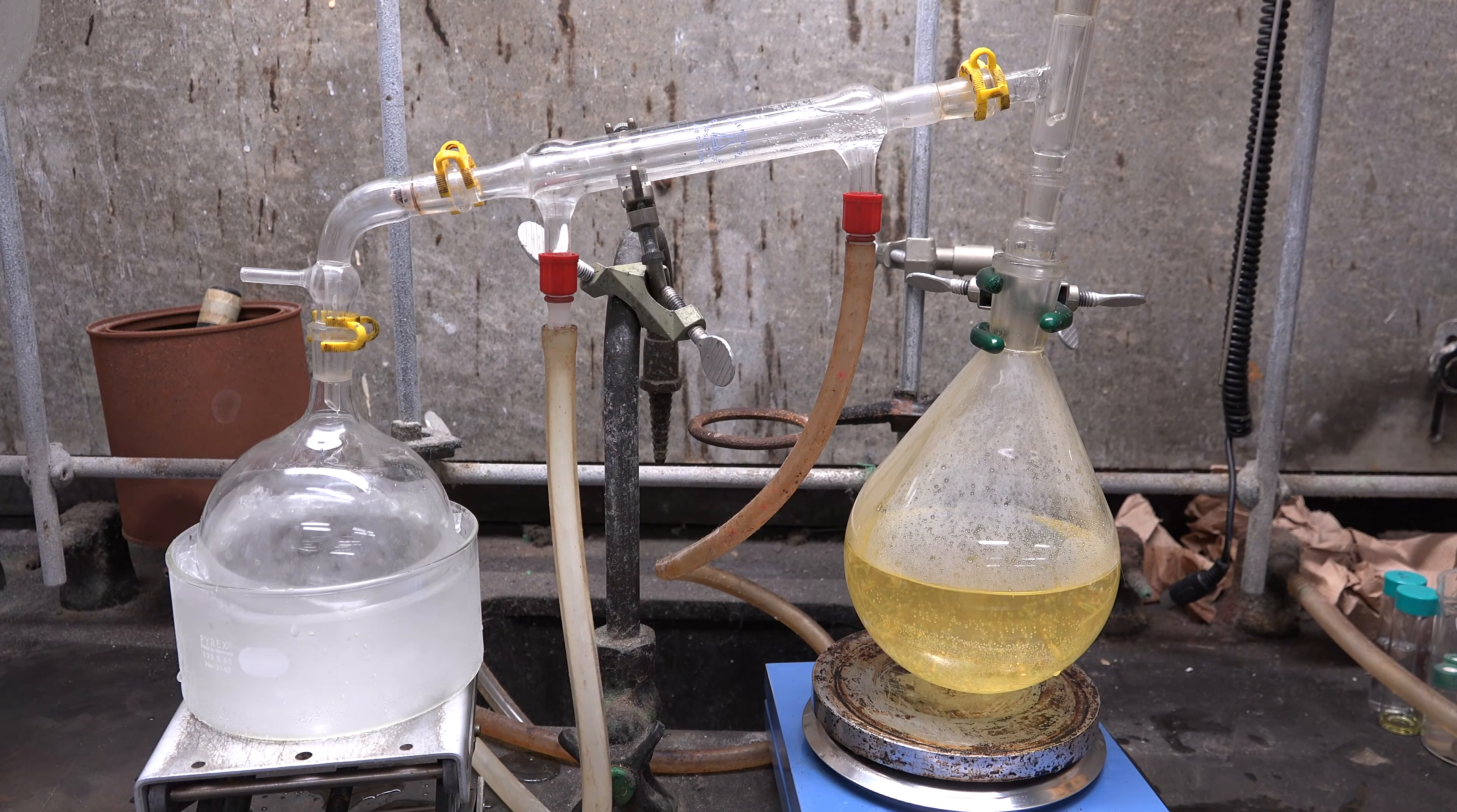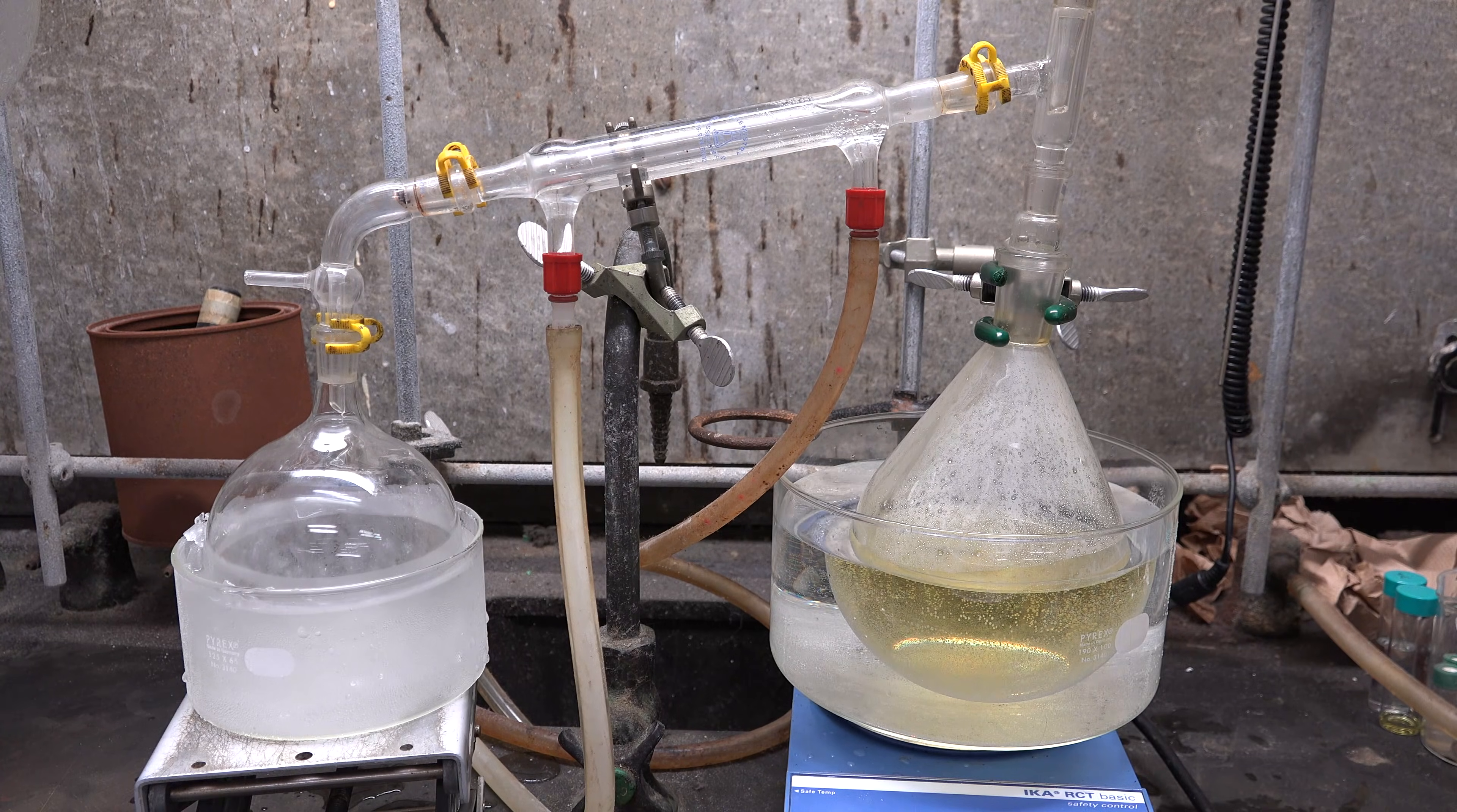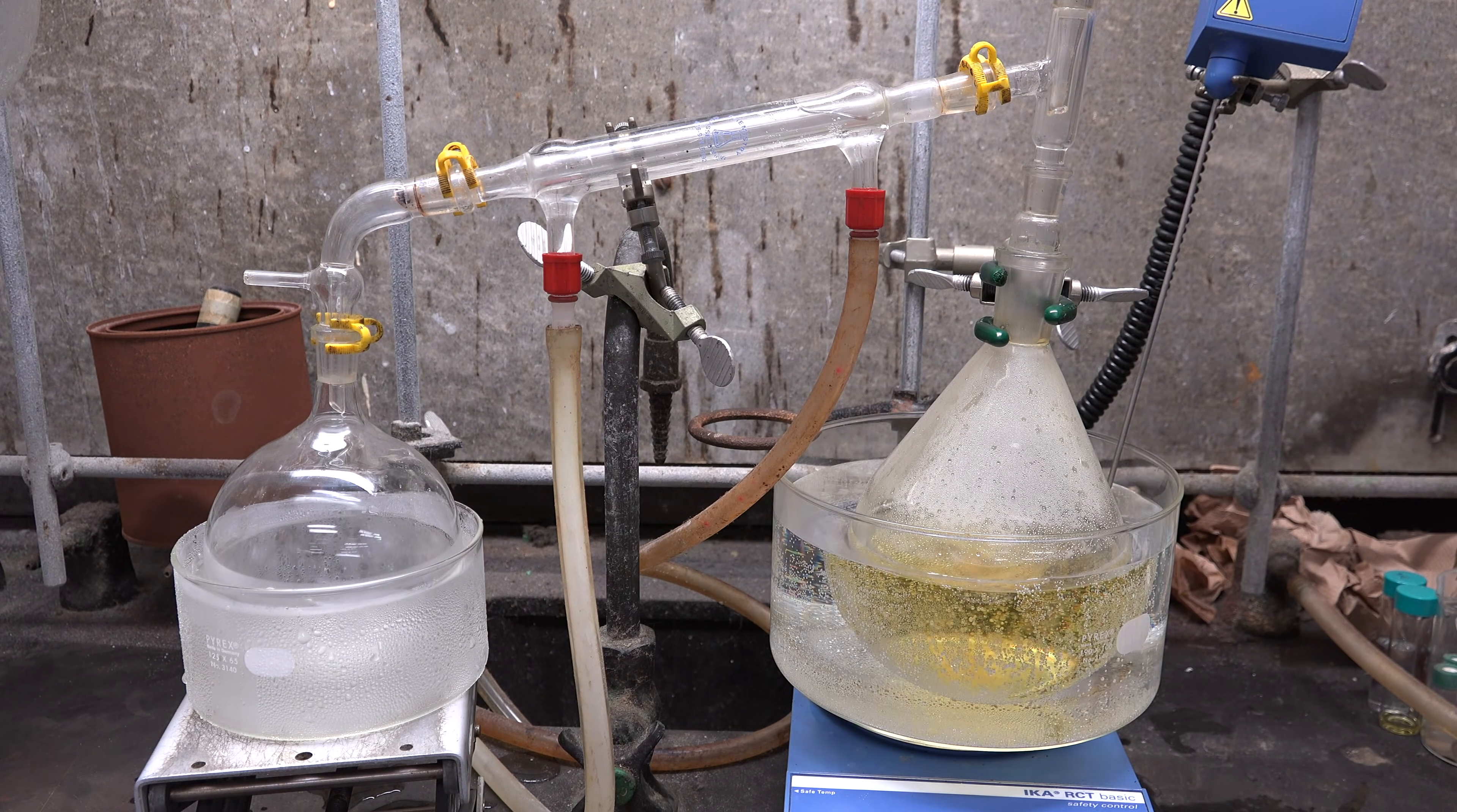As you can see we're already getting some condensation as the bromoethane vaporizes. Once all the sulfuric acid is added we place the boiling flask in a water bath and start heating. The water doesn't need to boil and in fact it would be best to adjust the temperature so you slowly condense the bromoethane and don't overshoot the cooling ability of your condenser. It would also be helpful to put a thermometer in your water bath and start at 40 degrees celsius. Gradually ramping up the temperature to a maximum of 70 degrees celsius as the dripping rate slows.